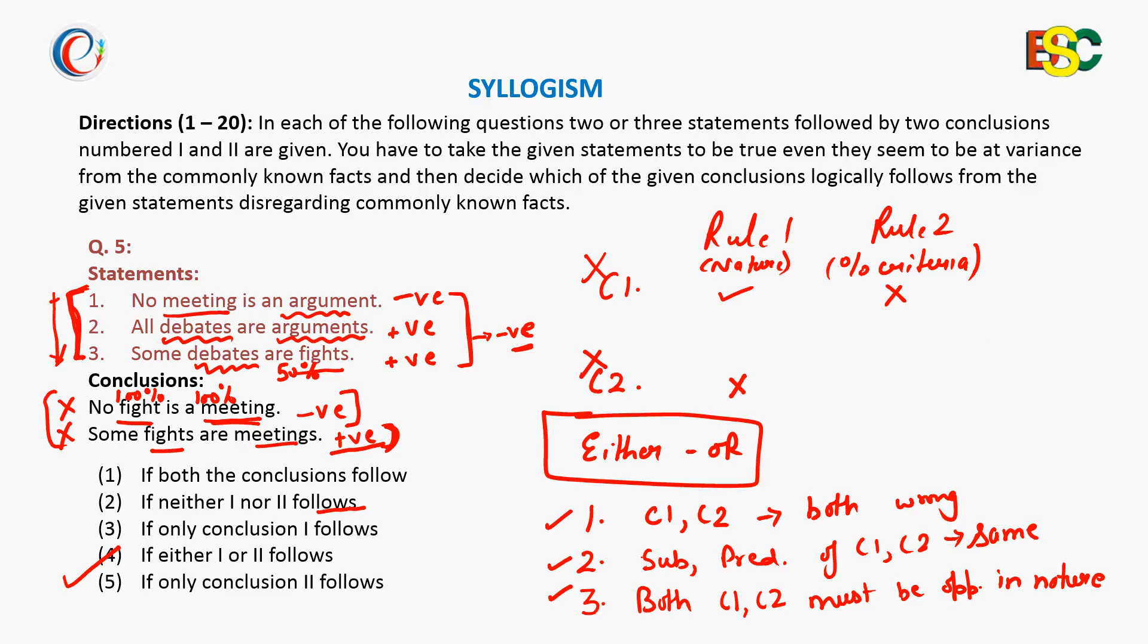So be careful in the case of either or. Whenever you see that two conclusions do not follow, then please check these three rules and find out that your answer is either or or neither nor. Okay students, thank you.